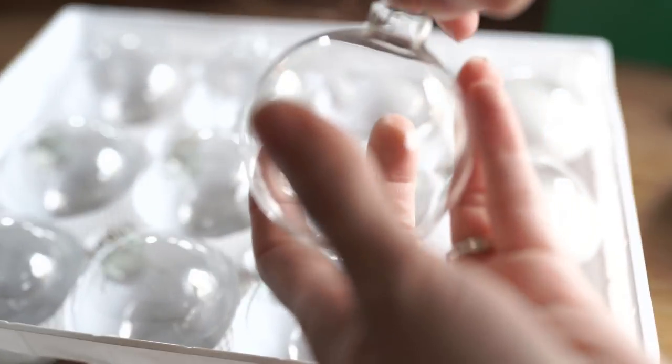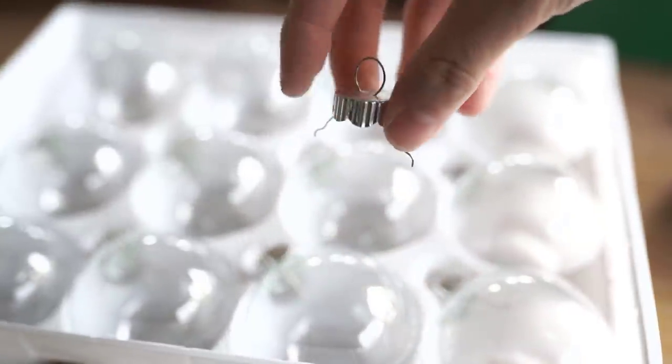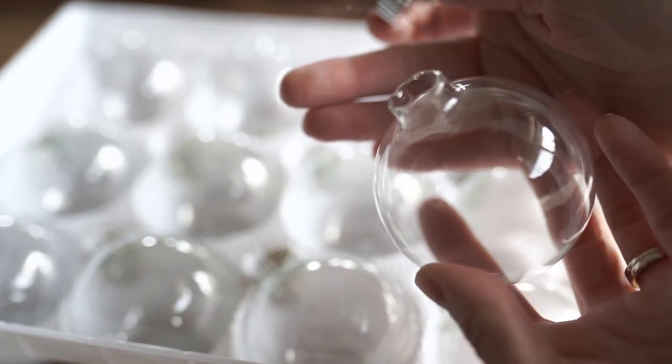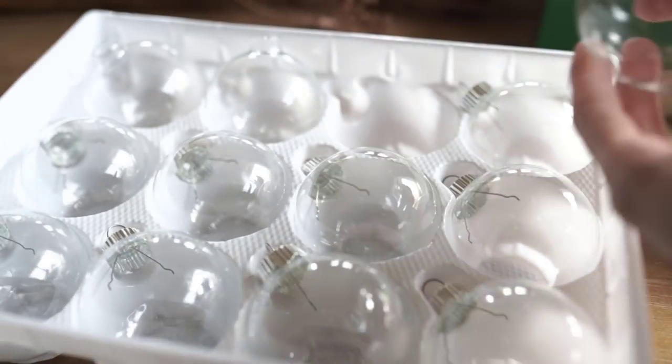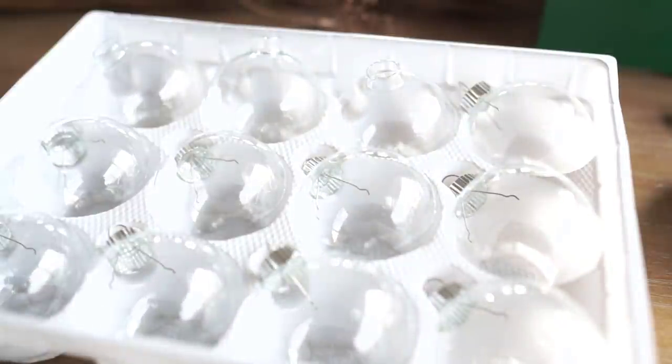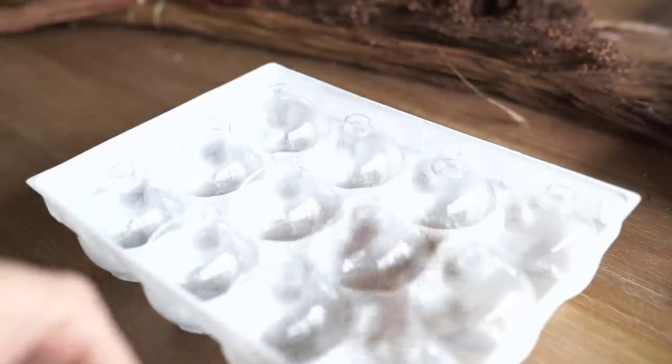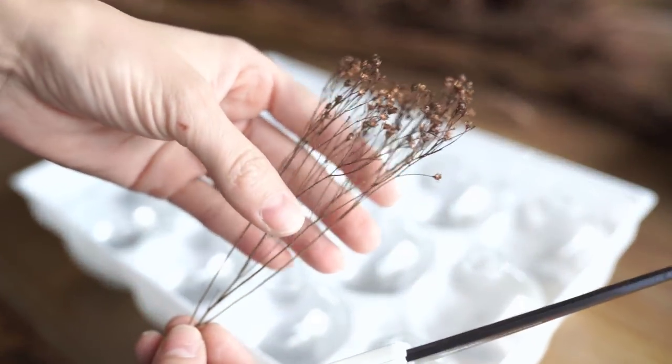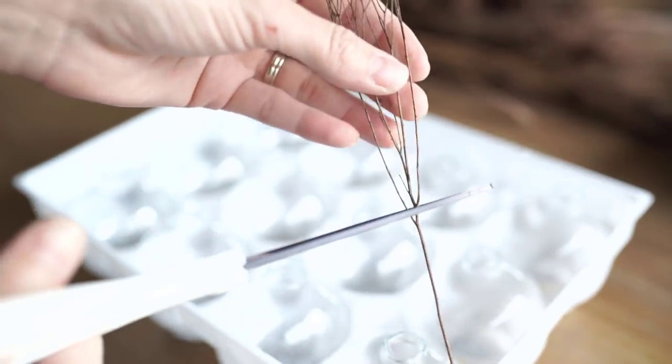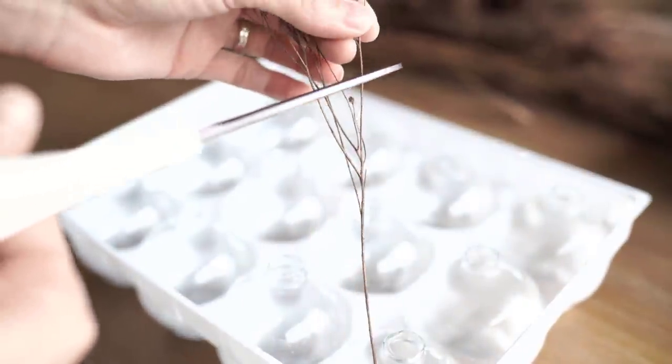So this DIY is really simple. I just took these clear glass ornaments, took the tops off - you just squeeze the little tops and they pop right out. I put the tops off to the side, and then I put the ornaments back in the little tray because it makes them so much easier to work with when they're not rolling all over. So I just took some dried florals, and they have so many different kinds at Hobby Lobby, and then I just kind of measured them out and cut them.